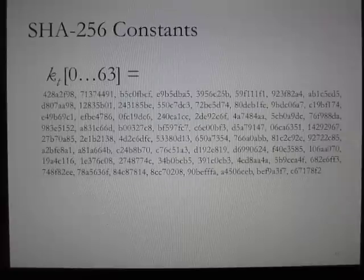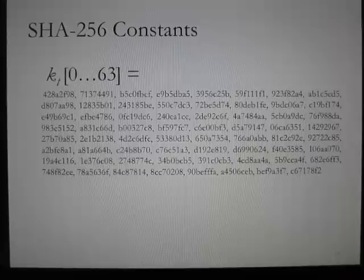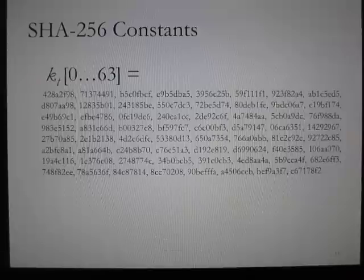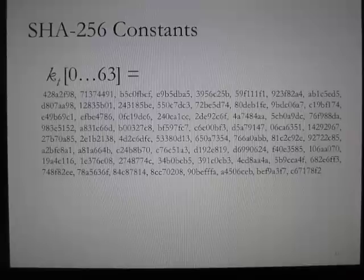The following shows the 64 SHA-256 constant values to be used for the 64 rounds of iteration T in the hash computation. These words represent the first 32 bits of the fractional parts of the cube roots of the first 64 prime numbers, represented in hexadecimal.